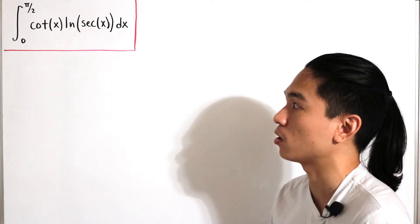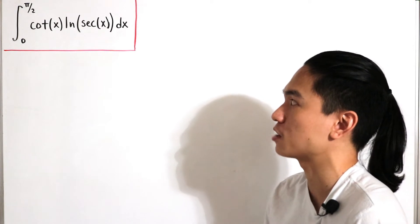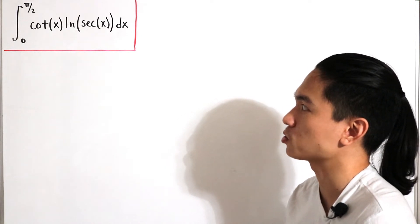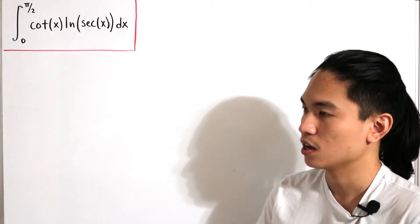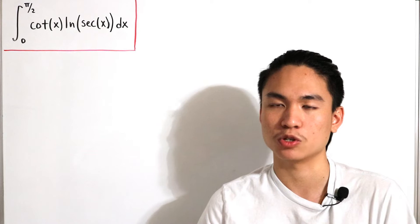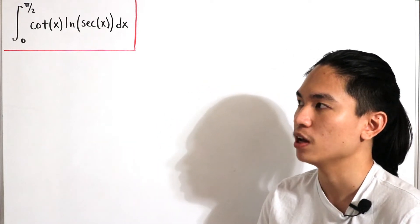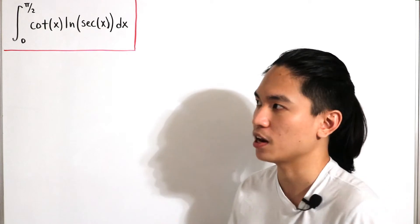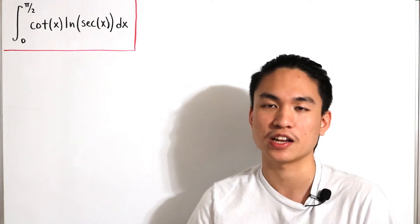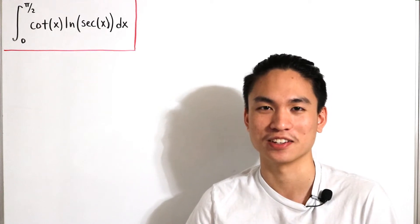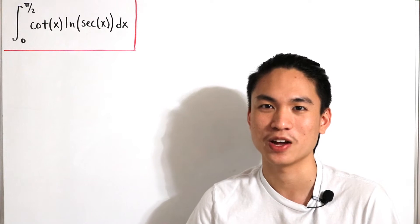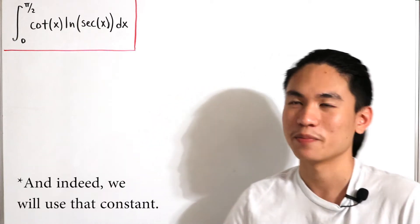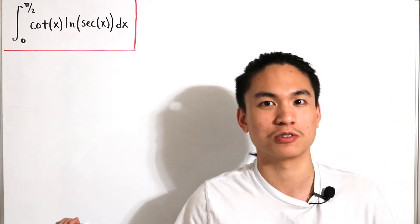The integral goes from zero to π/2, and the integrand is composed of trigonometric functions and a natural log — specifically, cotangent(x) multiplied by the natural log of secant(x) dx. The solution involves a u-substitution converting to a new variable, which leads to a well-known series. The evaluation comes down to a well-known constant that's actually in the thumbnail.